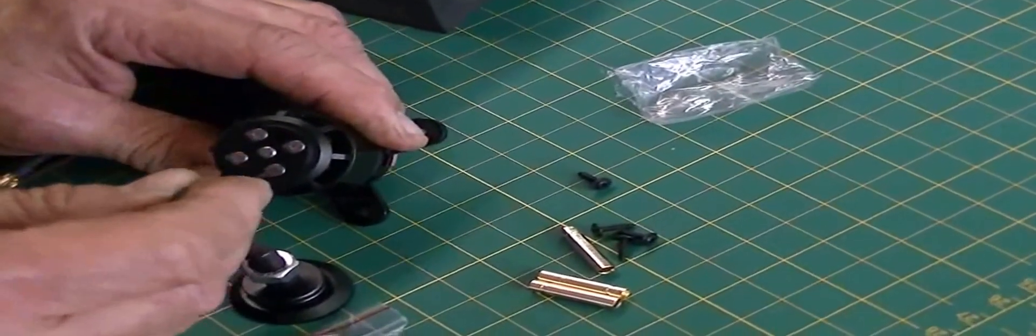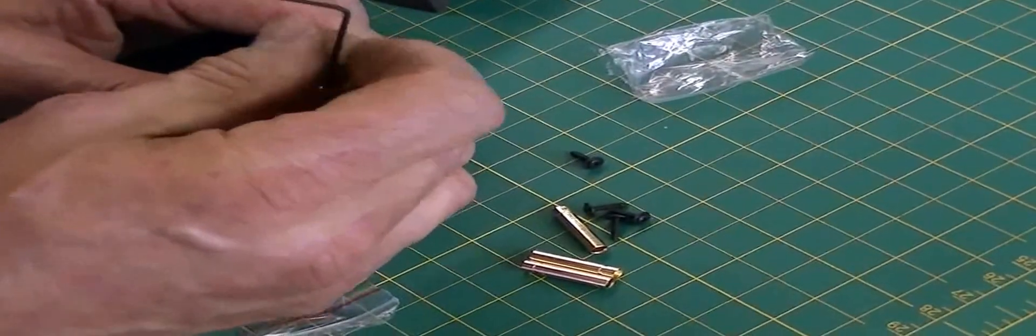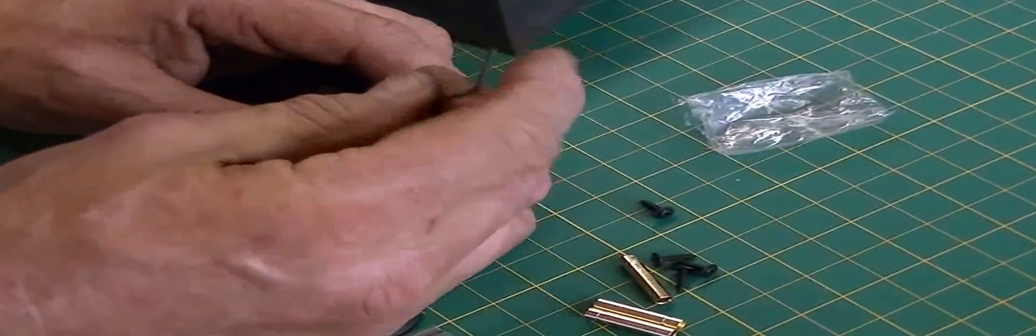These are 1.5mm Allens to remove the screws. And just take all these out. They come out really easy. Shouldn't be an issue with that.